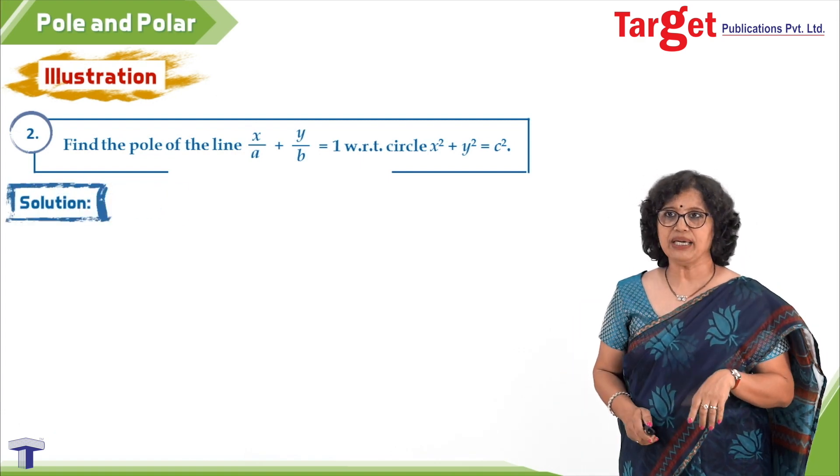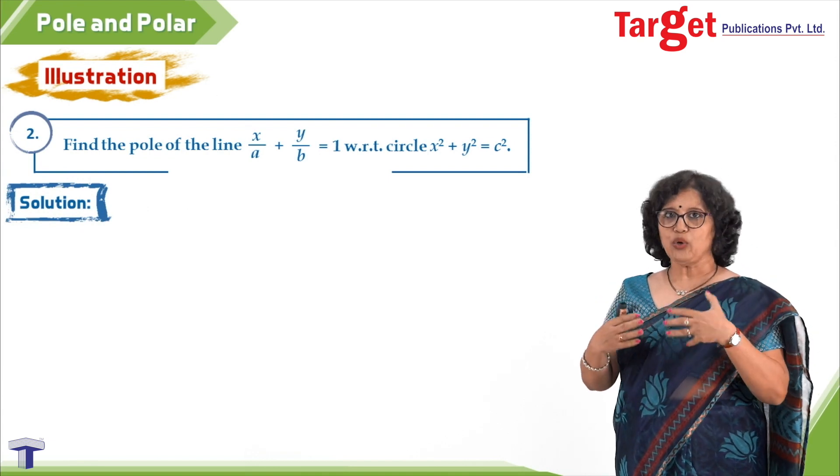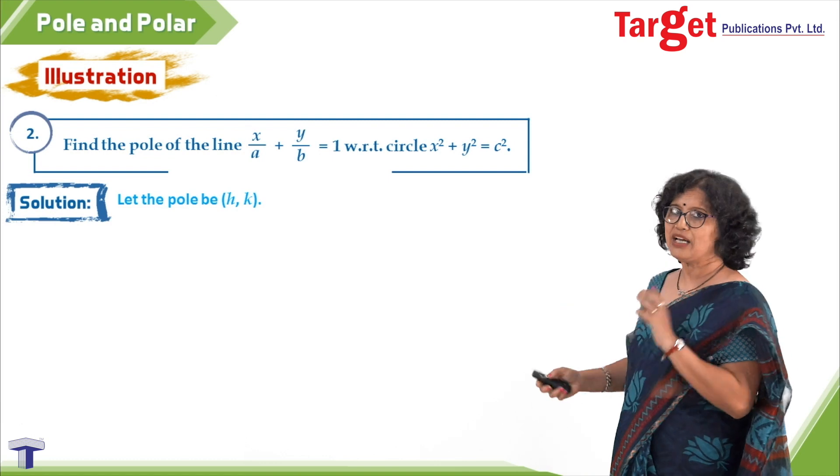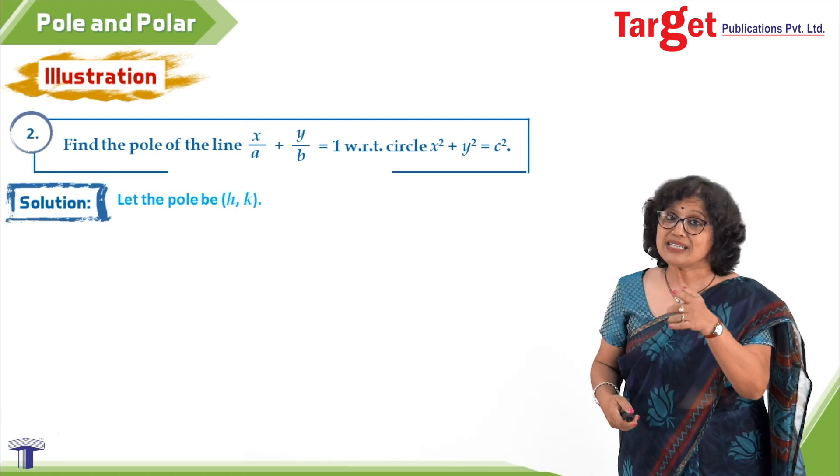Now, how do we proceed from here? Since you are interested in finding the pole, I will have to name it. So I say let the pole be (h, k). With this (h, k), I know how to write the polar's equation.